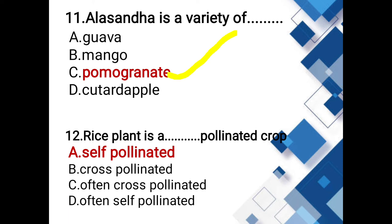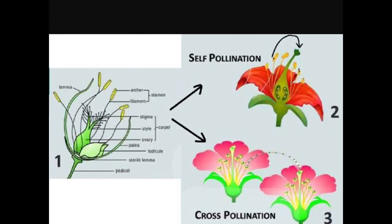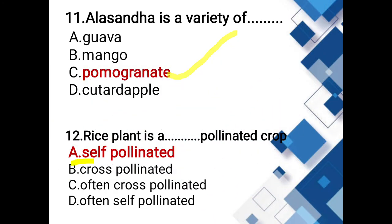Rice plant is which type of pollinated? Options: self, cross, often cross, often self. The answer is self-pollinated.